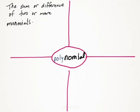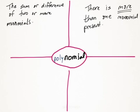For a polynomial you're looking at a sum or difference of two or more monomials. So we're going to have more than one monomial present. And here are two examples of polynomials. x squared plus one, so x squared would be a monomial, one would be a monomial, and because they're together it's going to be a polynomial.